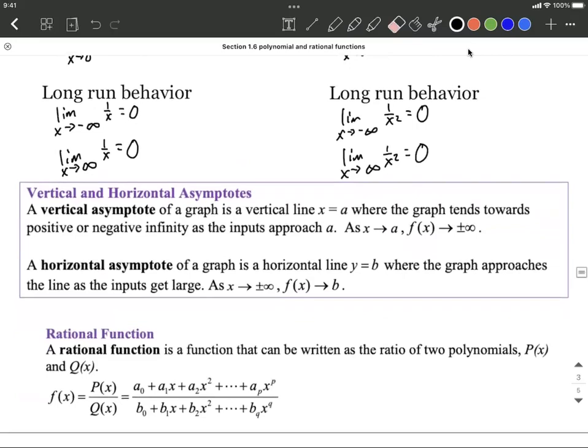Now final formal definition of rational function. Rational functions are these fractions where the numerator is a polynomial and the denominator is also a polynomial. Now a lot of books define these to be p over q. Nothing special about using those function names. Just one polynomial over another polynomial. Hope this helps.